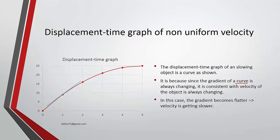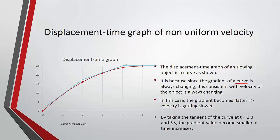At time equals 1, the gradient is a certain slope. At time equals 3, the gradient is flatter. At time equals 5, it is completely flat. Comparing these three gradients, you notice the gradient is getting smaller and smaller, which represents the object slowing down.